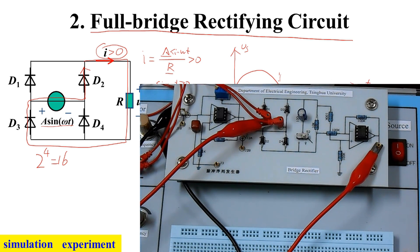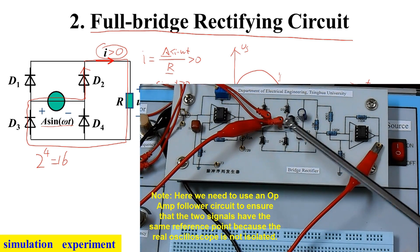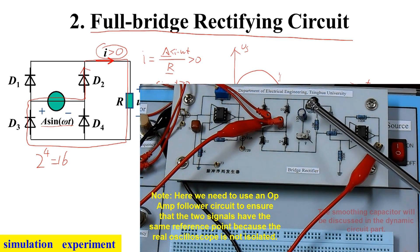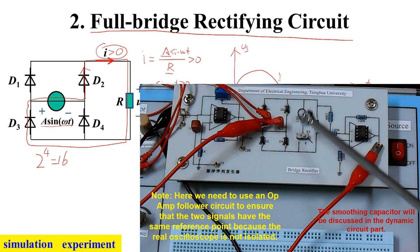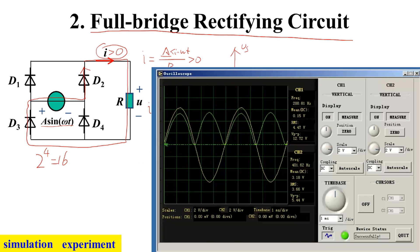Now we do a diode-bridge rectifier experiment. It can change AC to DC. This is the circuit. The input is AC voltage, and the output is the voltage across the resistor. It is isolated by the op-amp circuit. We can use the scope to observe the waveforms of the input and output voltage, with or without the capacitor through the controlling switch. You can see the waveform of the input and output voltage in the case without the capacitor.